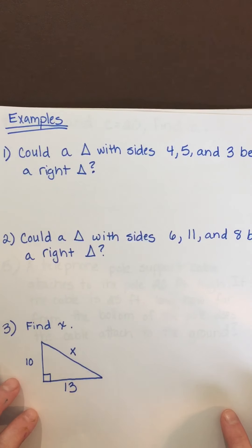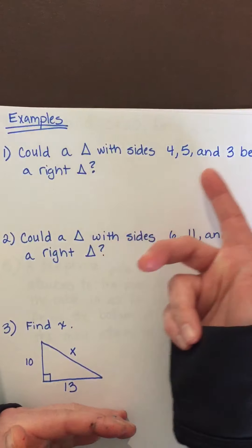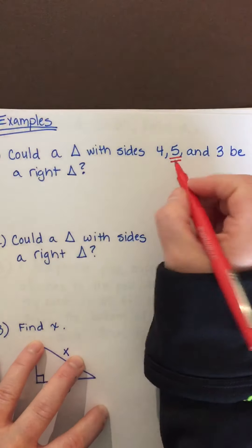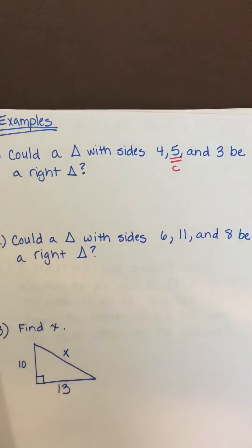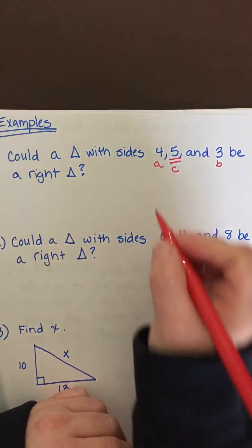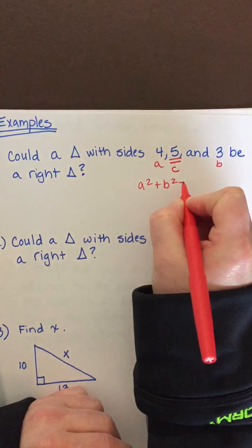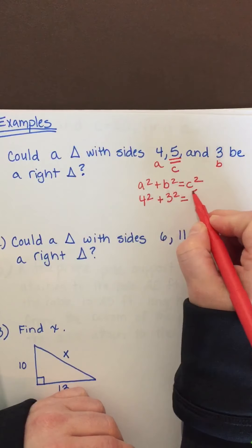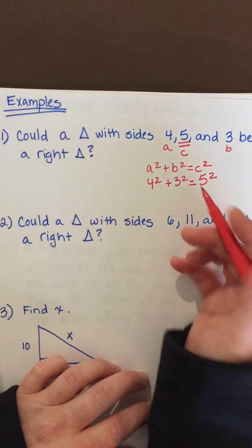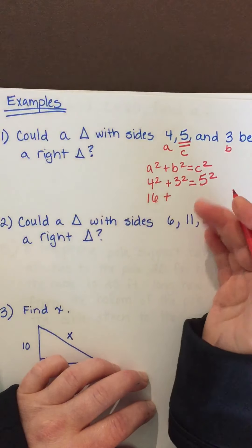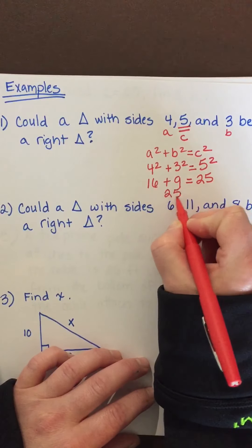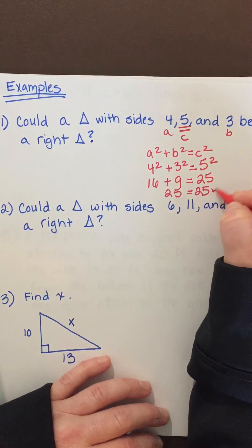Example 1: Could a triangle with side lengths 3, 4, and 5 be a right triangle? First, find the biggest number — 5 — that's c. Then 4 and 3 are a and b. Write the Pythagorean theorem: a squared plus b squared equals c squared. Plug in: 4 squared plus 3 squared equals 5 squared. That gives 16 plus 9 equals 25, and 25 does equal 25.